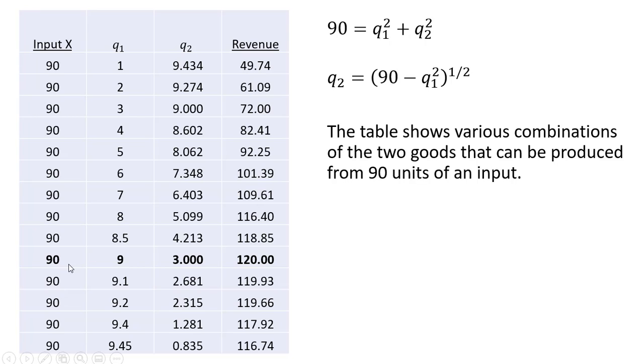And here we can see that revenue does seem to be maximized here at 9 units of good 1 and 3 units of good 2. Producing a little bit less of good 1 leads to lower revenue. Producing a little bit more of good 1 leads to also a little bit lower revenue. Alright, that is my example.